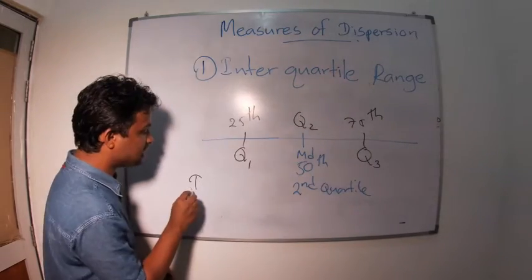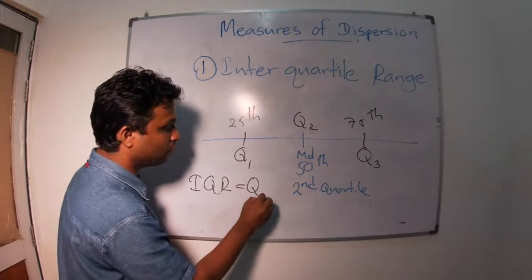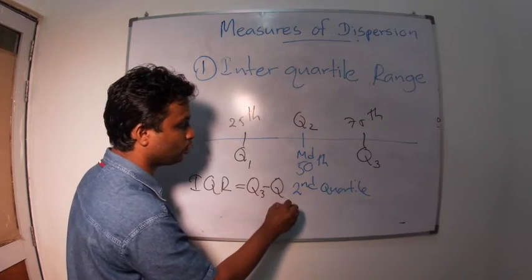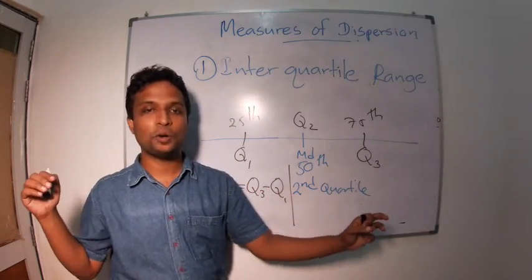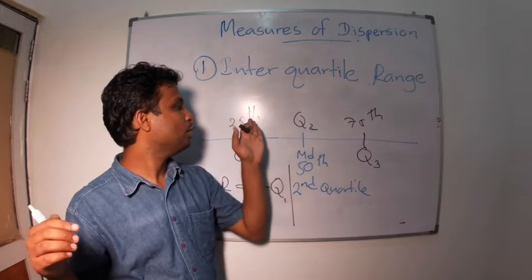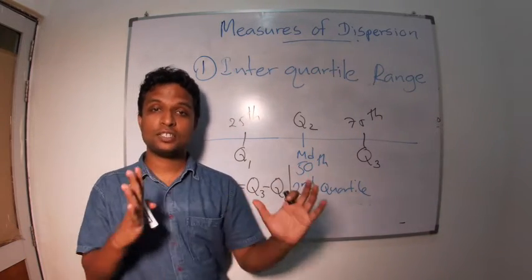So what is inter-quartile range? Inter-quartile range IQR equals Q3 minus Q1. Instead of telling the smallest value and the largest value, we go by the 75th value and 25th value.